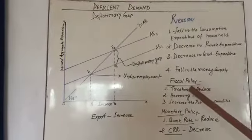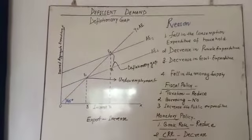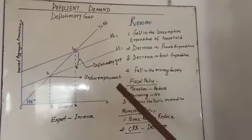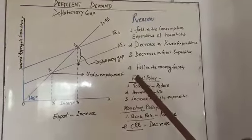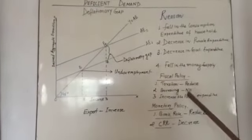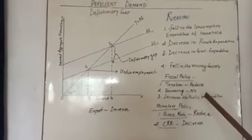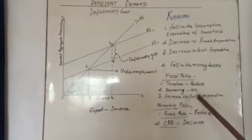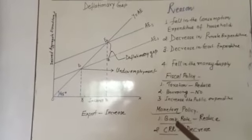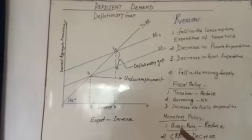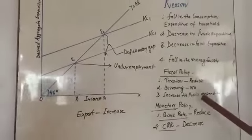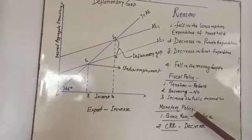The government reduces this situation with the help of two methods — fiscal policy, monetary policy, and foreign trade policy. Under fiscal policy, taxes are reduced — both direct and indirect taxes — by which consumption is going to be increased. No borrowing is made by the government. Third, public expenditure is increased, for example investment in roads, bridges, and railways.